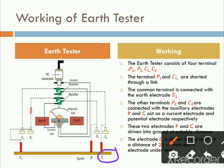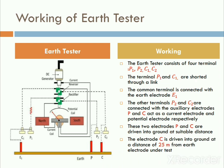The electrode C is fixed in the ground at approximately 25 meters distance from the earth electrode under test. Then the working process begins with terminals P1, P2, C1, and C2.